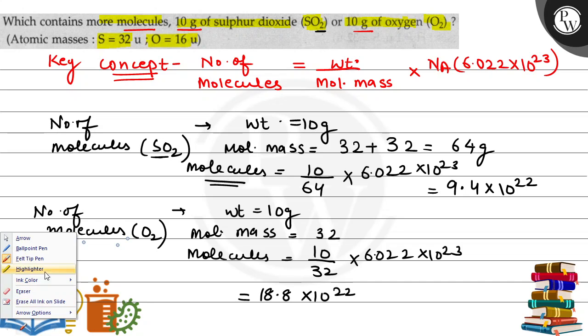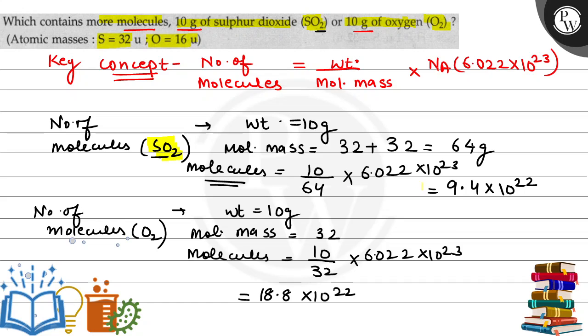We have found the number of molecules in both cases. For SO2, it is 9.4 × 10²², and for O2, it is 18.8 × 10²². If we compare,